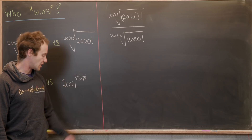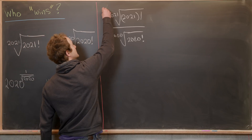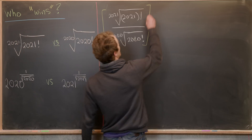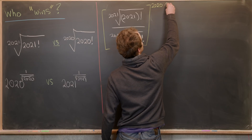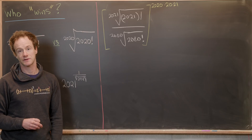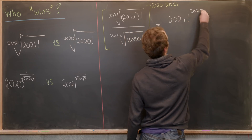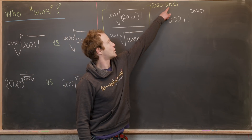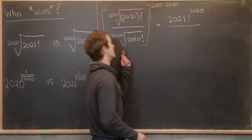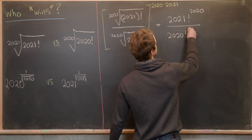A number is larger or smaller than one if and only if, when you raise it to any exponent, it's larger or smaller than one. So we can get rid of the radicals by raising this ratio to the exponent 2020 times 2021. That leaves us with 2021 factorial to the power of 2020 in the numerator, and 2020 factorial to the power of 2021 in the denominator.